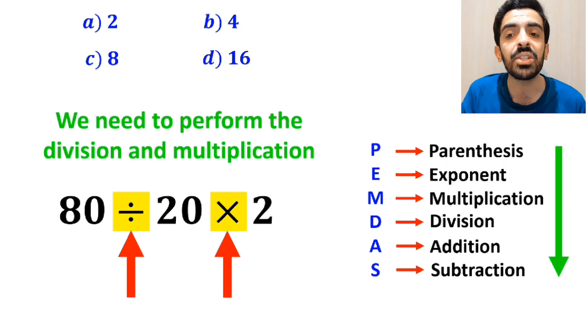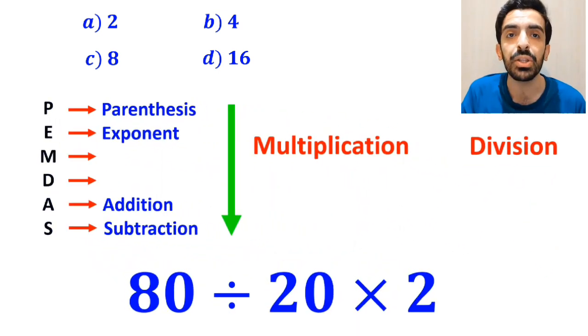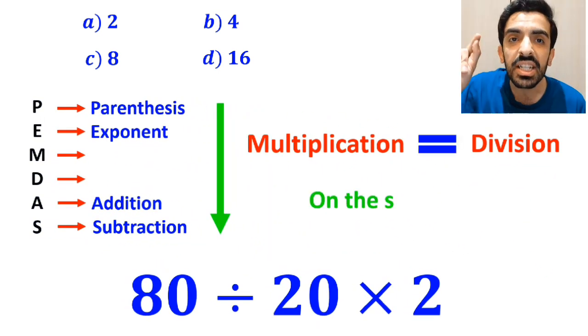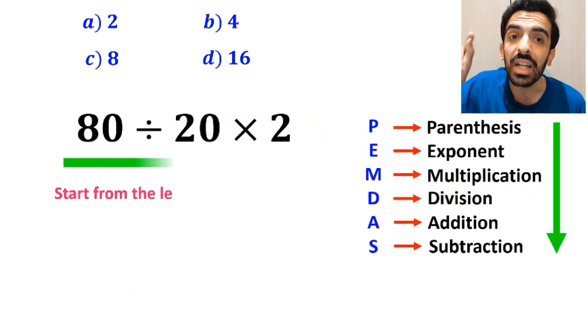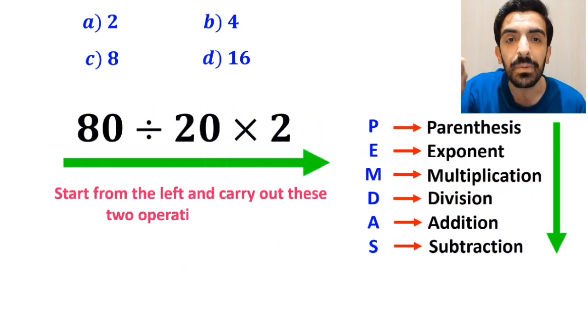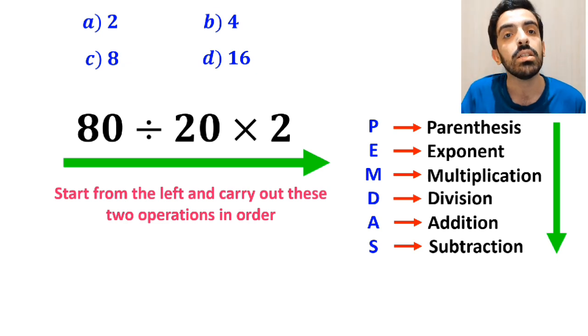However, it's very important to keep in mind that multiplication and division are on the same level of precedence. In this case, the best approach is to start from the left and carry out these two operations in order.